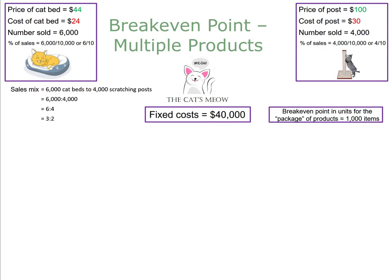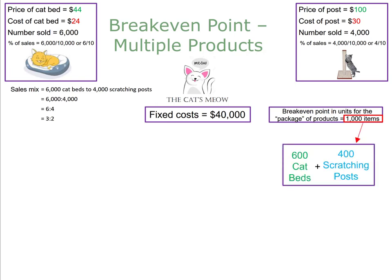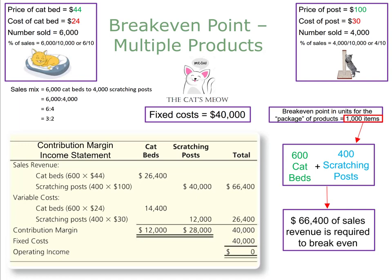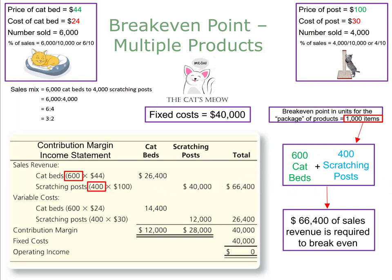Our final answers to management: to break even, we need to sell 1,000 items — specifically 600 cat beds and 400 scratching posts. In dollars, that's $66,400 of sales revenue required to break even. We verify this with a contribution margin income statement using 600 cat beds and 400 scratching posts, confirming $66,400 of sales revenue. After subtracting variable costs and fixed costs, operating income equals zero, proving our answer is correct.